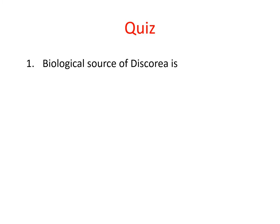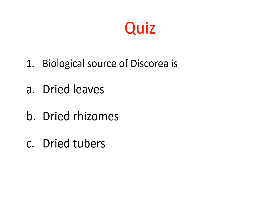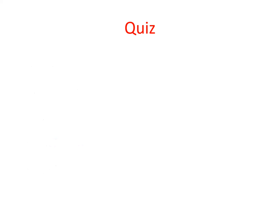The first quiz question is: the biological source of Dioscoria is? Options are: dried roots, dried rhizomes, dried tubers, and dried bark. The correct answer is dried tubers.